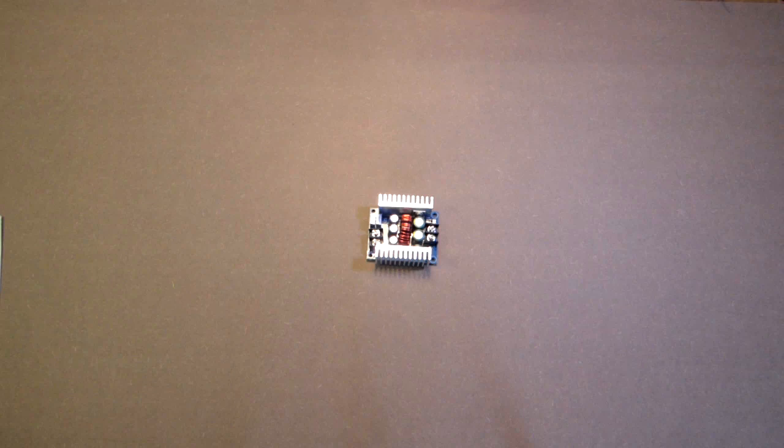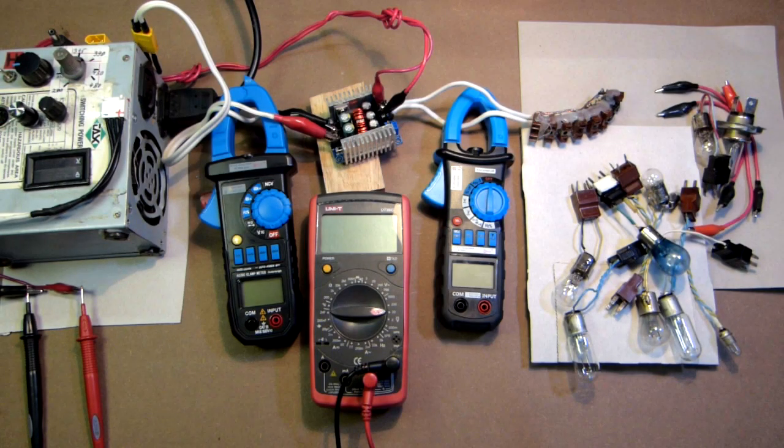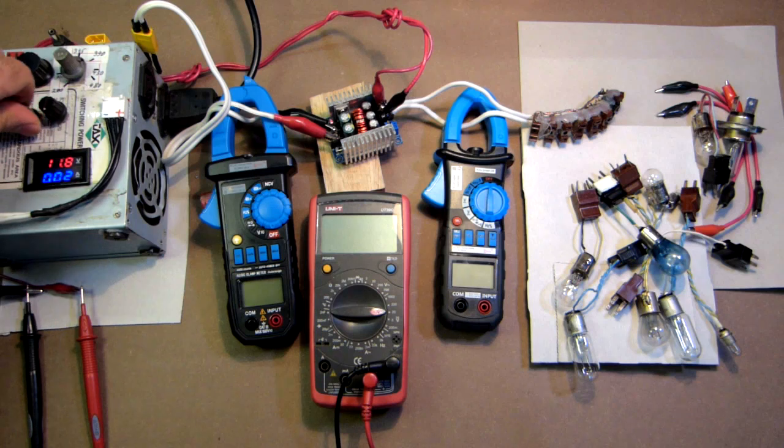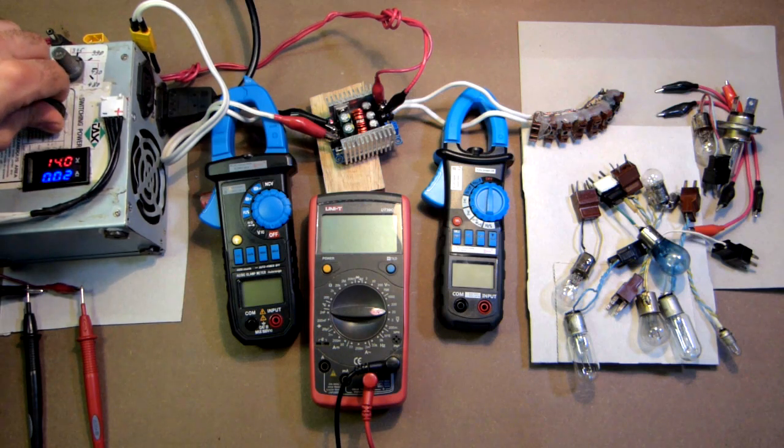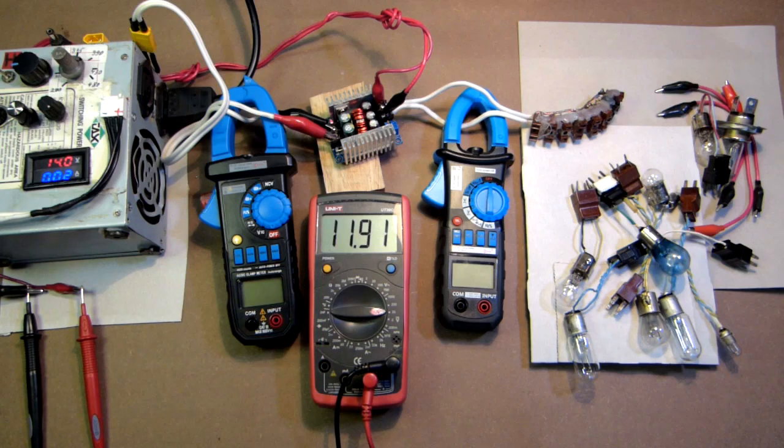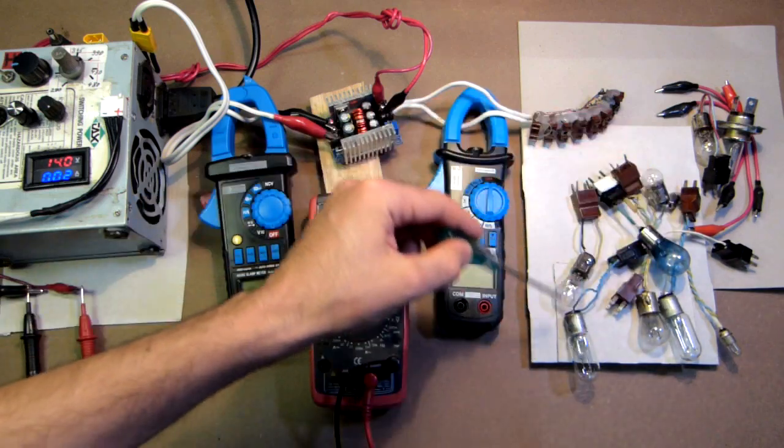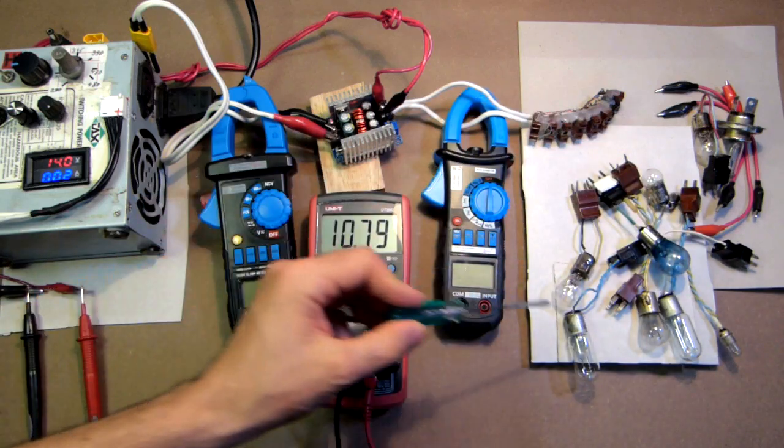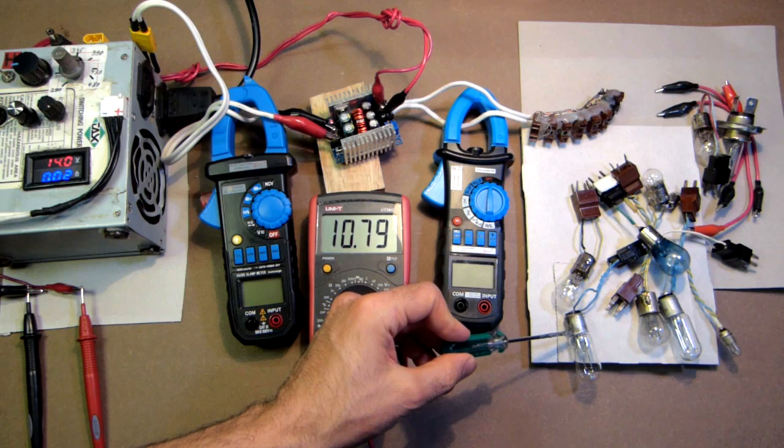Let's connect it to the power source, connect the load to it and test this device. So now everything is connected. The power source will be 14 volts and the output will be set to 8 volts, because one of these car bulbs is designed only for 8 volts.